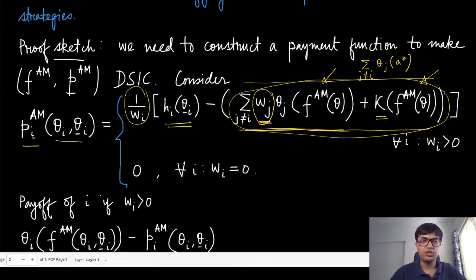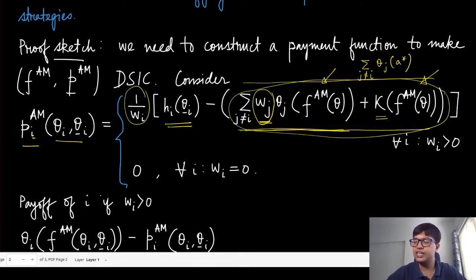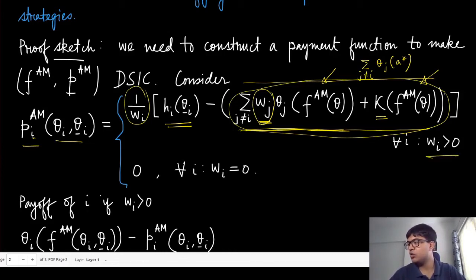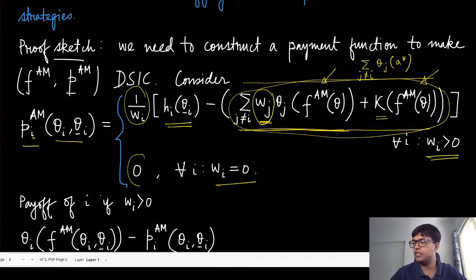The entire expression is divided by w_i, the weight of player i. We choose these numbers so the mechanism is DSIC. When the weight is zero, this payment is also zero, since dividing by zero is avoided by defining the payment as zero in that case.